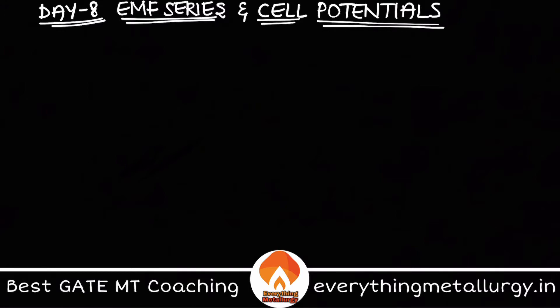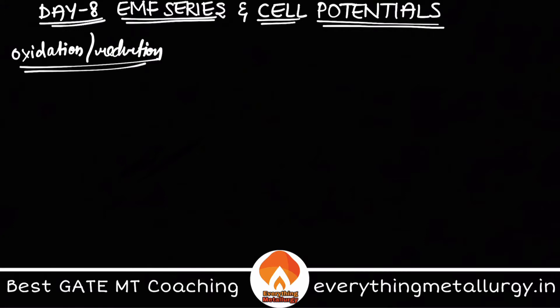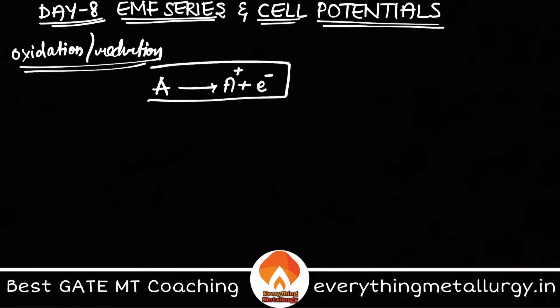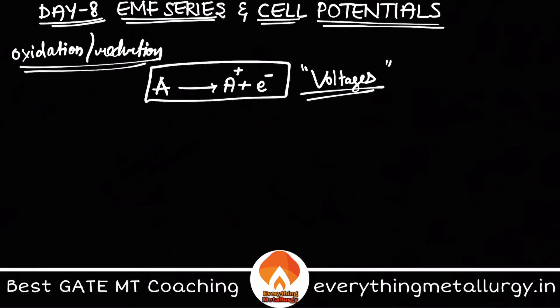Any metal or any element will undergo either oxidation or reduction. Let me take a metal A which is getting oxidized. What is oxidation? Removal of electrons. In this particular case, one electron has been removed and I get a plus ion. There is some kind of electromotive force associated with this particular reaction.